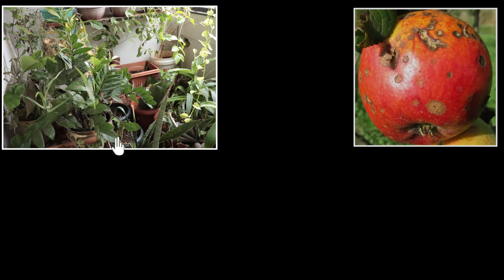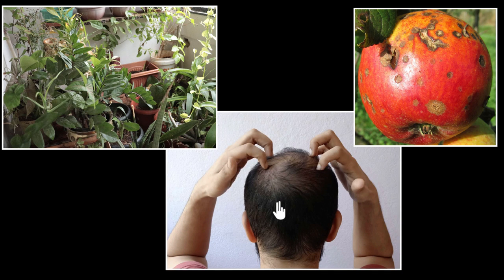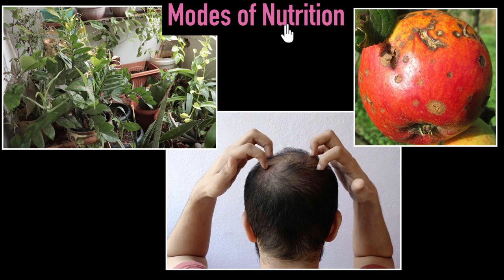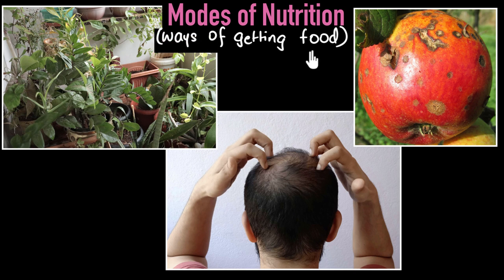Why do these plants in my balcony need sunlight? Why is this apple rotting? And why does my head eat so much? To answer these seemingly random questions, we need to figure out the modes of nutrition. Basically, what are the different ways of getting food? And that's what we'll do in this video.